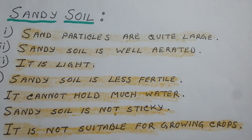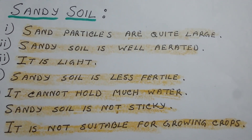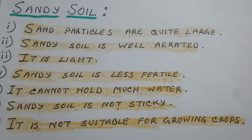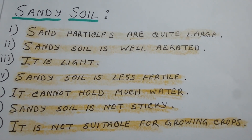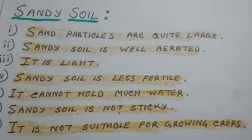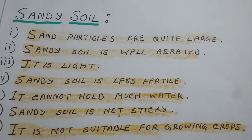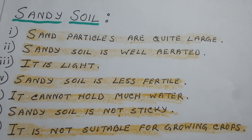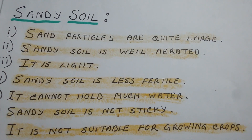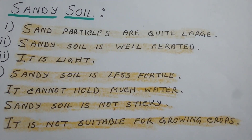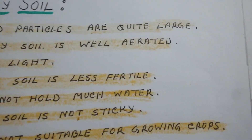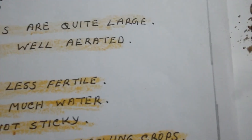Sandy soil lacks humus, so it is less fertile. It does not hold water, has less humus, and fewer soil organisms, making it not suitable for growing crops. Sandy soil is not sticky and is found mainly in deserts.